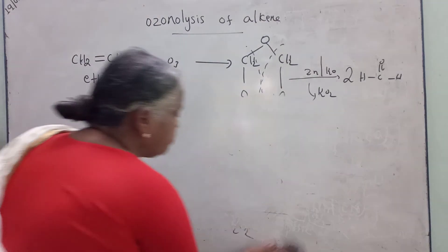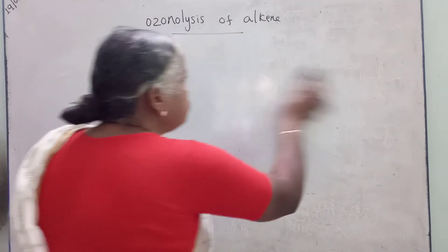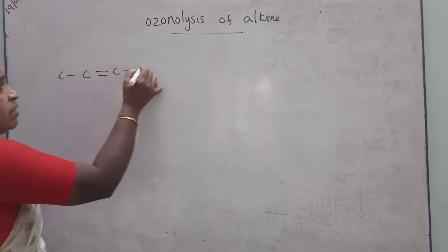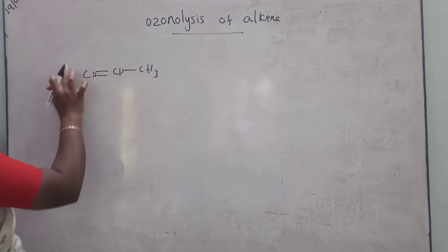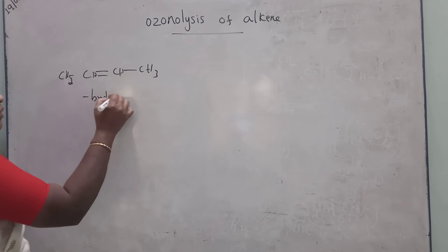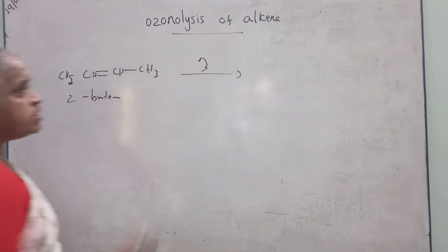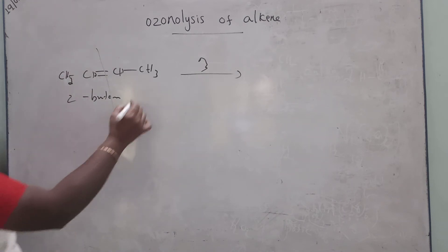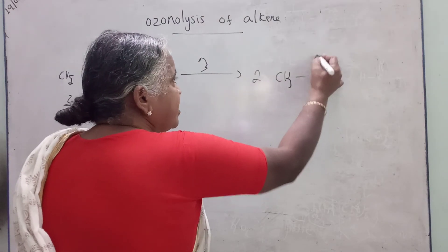Now consider a molecule with carbon number 2 and carbon number 3 — this is carbon number 4. The structure is CH₃-CH=CH-CH₃, so the name is 2-butene. This is systematic: 1-butene would differ. For 2-butene, each fragment has 2 carbons, so you will get 2 molecules of acetaldehyde.